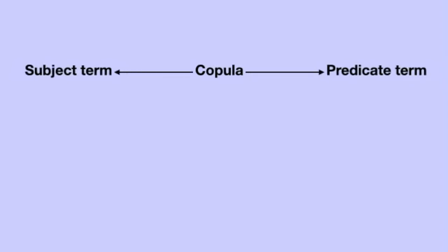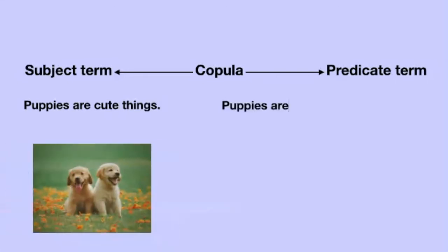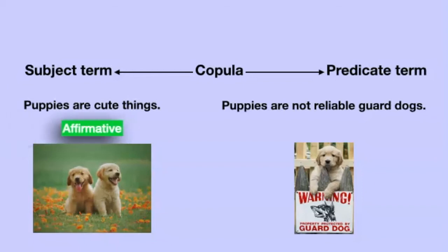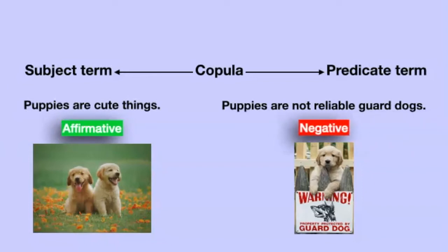The third part of a categorical proposition is indicated by the words are and is. This element is called the copula, and it links the subject term to the predicate term. In all the examples we've gone over so far, the copula has been affirmative. But the copula can also be negative. Consider this example: puppies are not reliable guard dogs. In this example, the copula 'are not' is negative. When categorical propositions are affirmative, they're saying that the subject class is included in the predicate class. But when they are negative, they're saying that the subject is excluded from the predicate class.